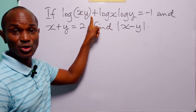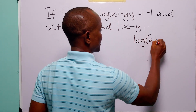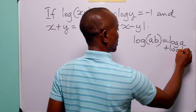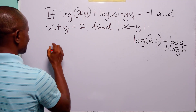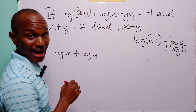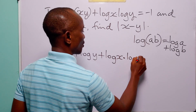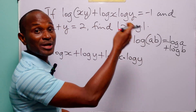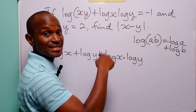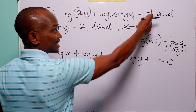To solve this problem, we start with the first condition. Remember that log(a times b) is equal to log(a) plus log(b). So log(xy) is the same as log(x) plus log(y), and we have plus log(x) multiplied by log(y). Now let us bring minus 1 over from the right-hand side to the left-hand side. The negative crosses over the equality sign and becomes positive, and this is now equal to 0.